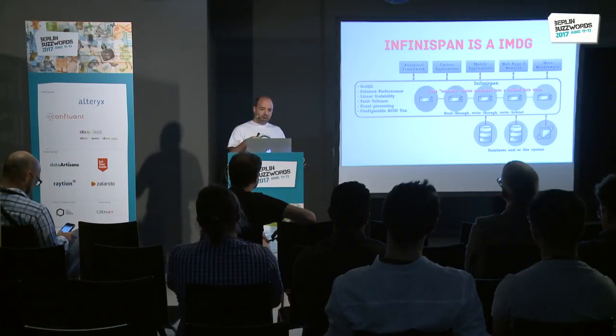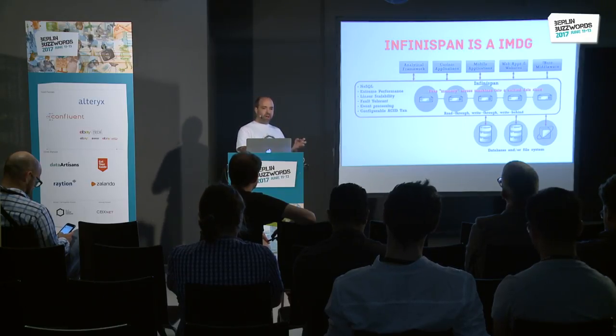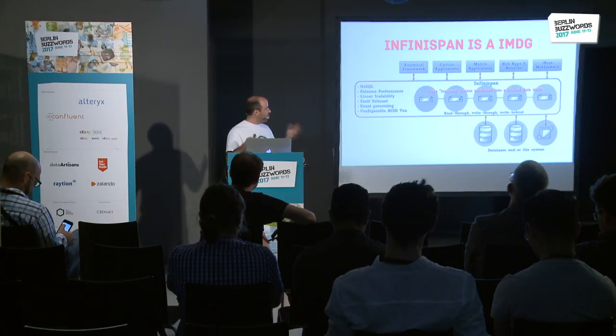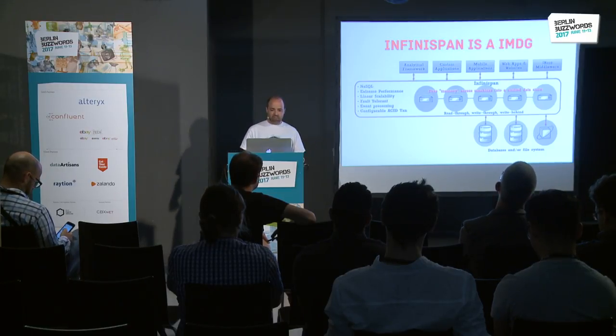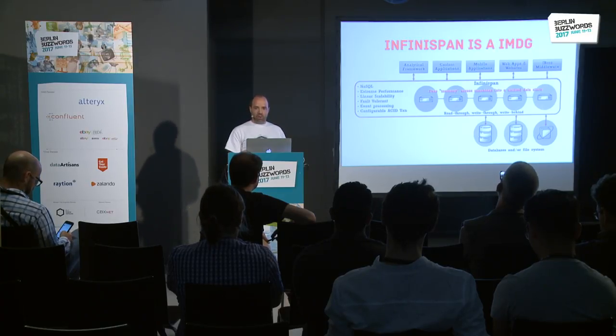They're designed to be linearly scalable because they use smart data distribution techniques — you can say you want to keep one, two, three, or four copies of the data, and the data grid knows how to keep that around using consistent hash algorithms. Each node owns a subset of the data, giving implicit data parallelism. It's elastic: you can add or destroy nodes with no problem. Failure is handled transparently, making it great for cloud environments. You can back it up with a persistent store, and access it from Java, Node.js, C, C++, etc.